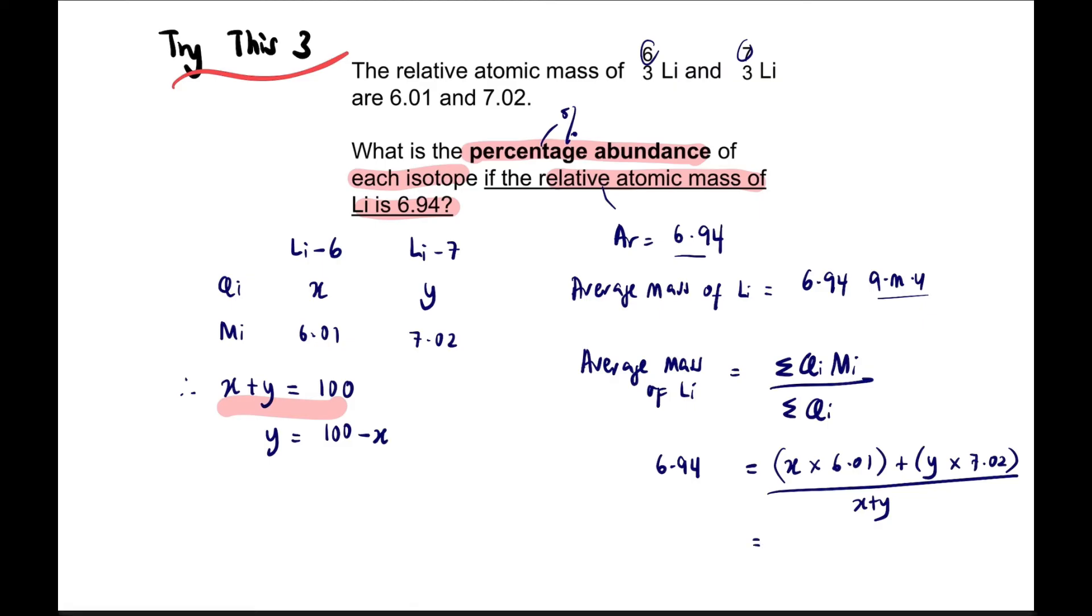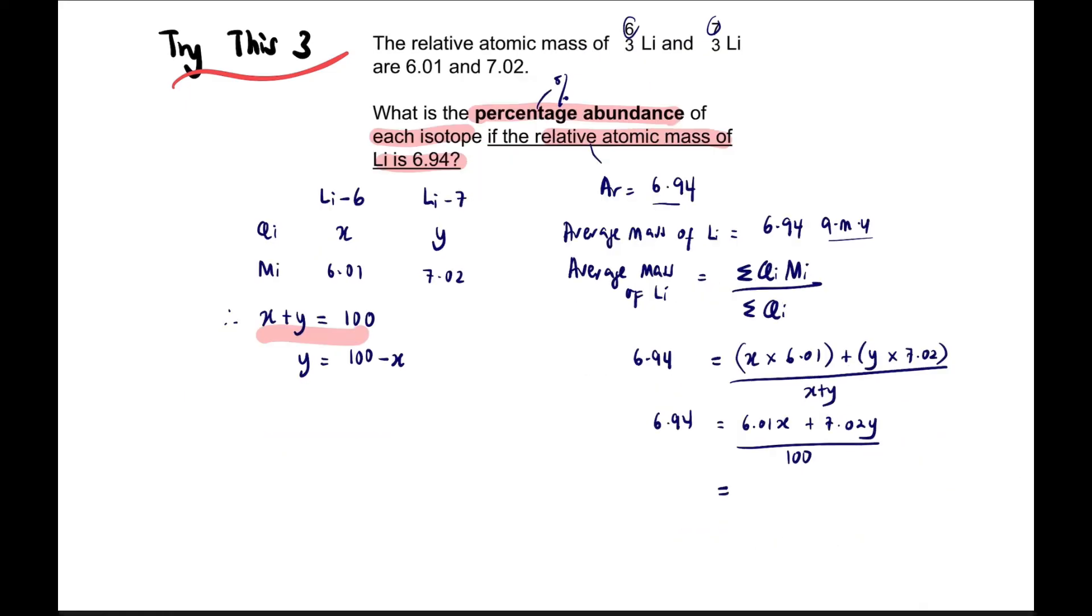Now looking back at what we assumed, X plus Y equals 100. Substitute that at the bottom, so we get 6.01X plus 7.02Y over 100 equals 6.94. Multiply across: 694 equals 6.01X plus 7.02Y. Now substitute Y with 100 minus X and expand to get 702 minus 7.02X. This is our final equation.